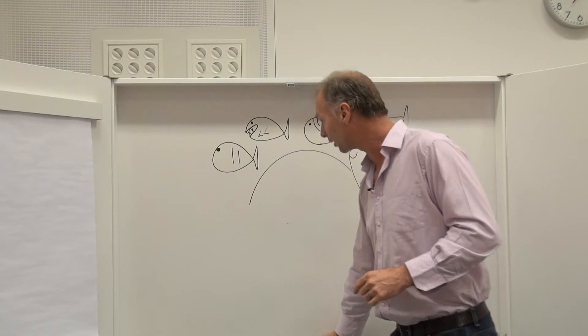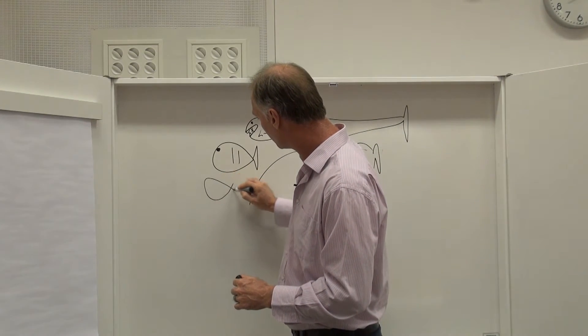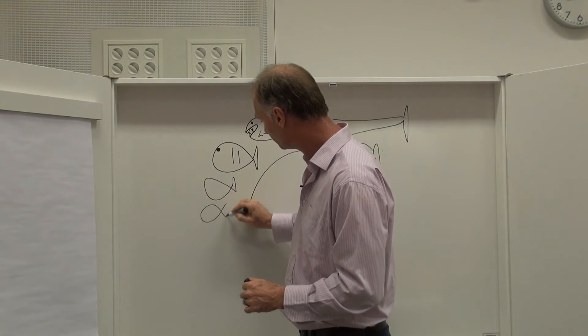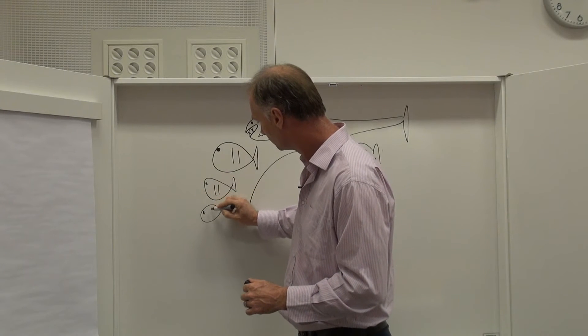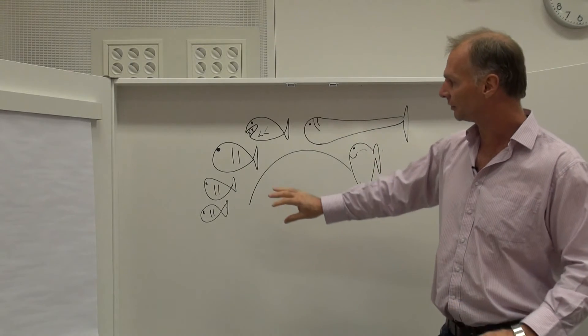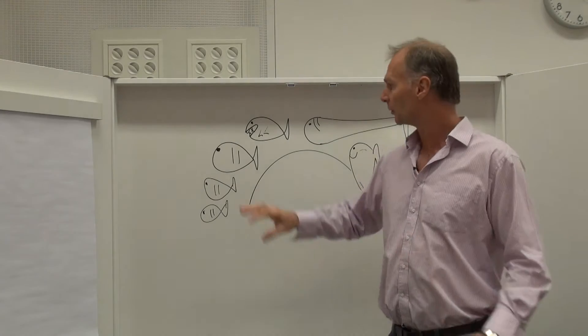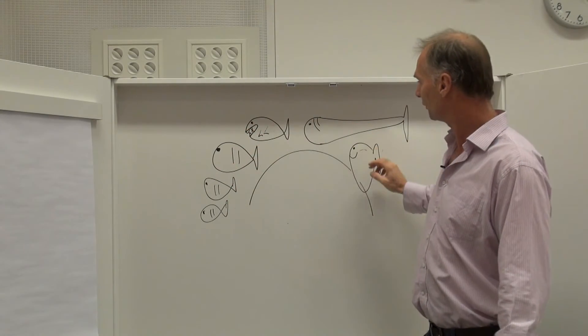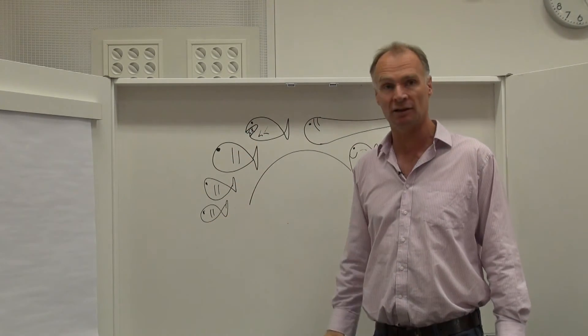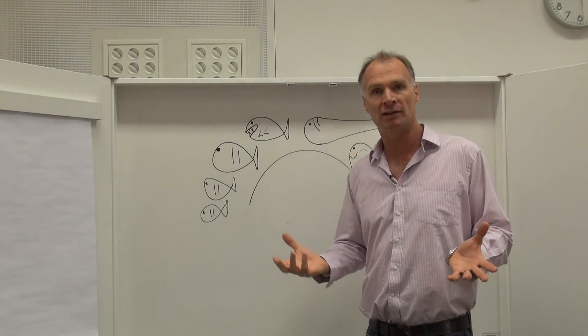However, we also note that when we hop in the water, sometimes we see lots of the same fish. And it means that in some cases there's an unevenness between the different types of species. In this case, there's three of this species and only one of each of these ones. And this is called species evenness.